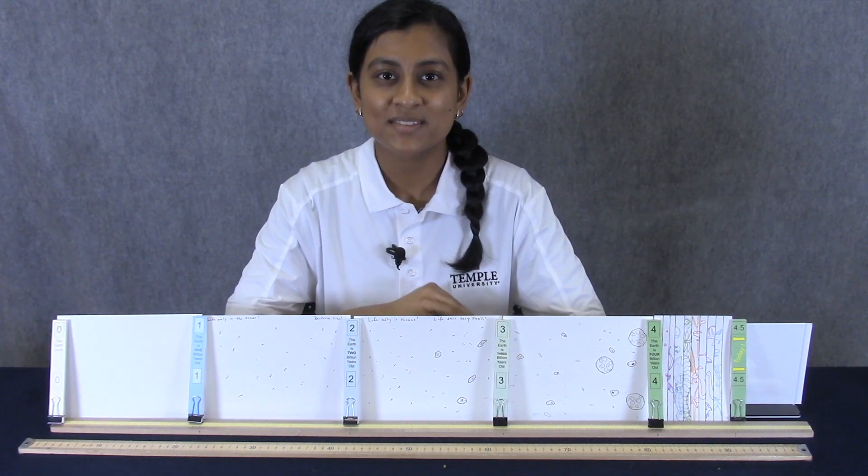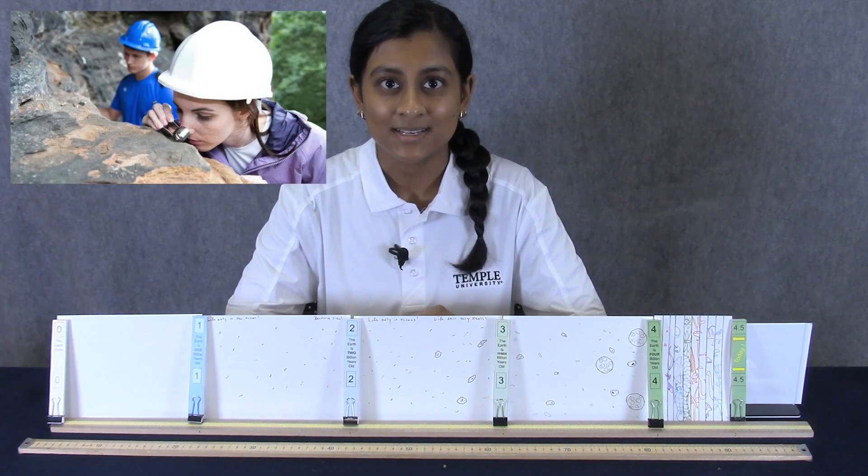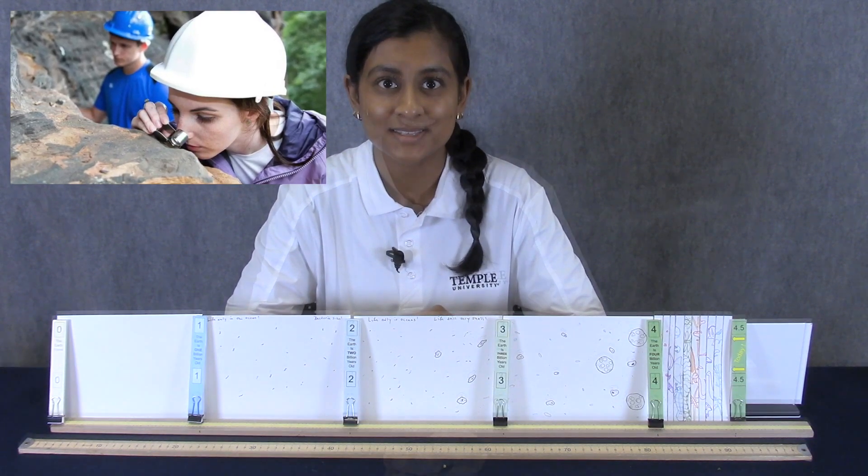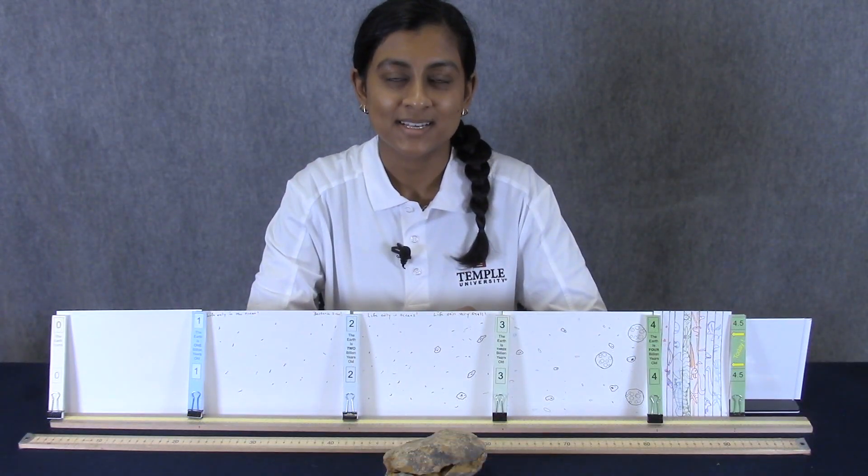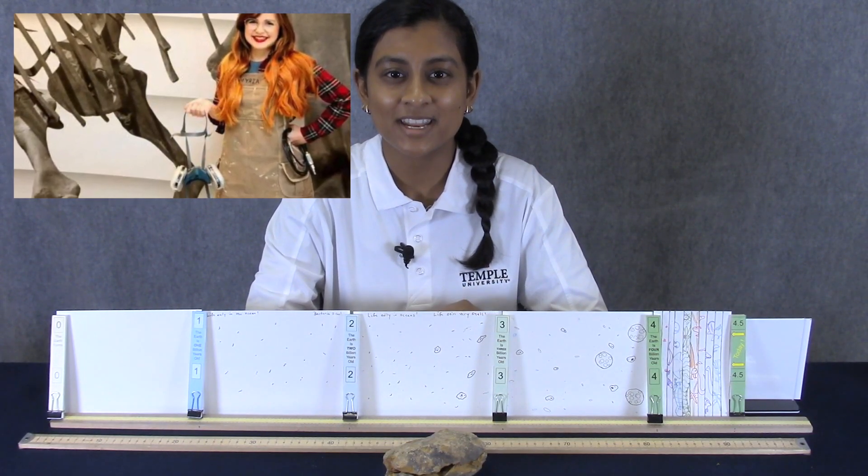There are two types of scientists that study the age of our Earth. The first type of scientist is called a geologist, and those scientists study rocks. The second type of scientist is called a paleontologist, and those scientists study fossils.